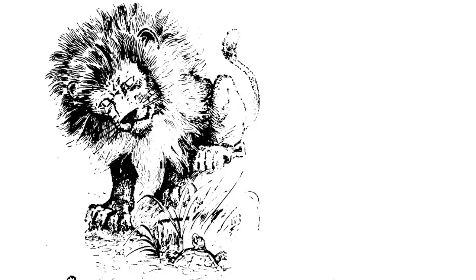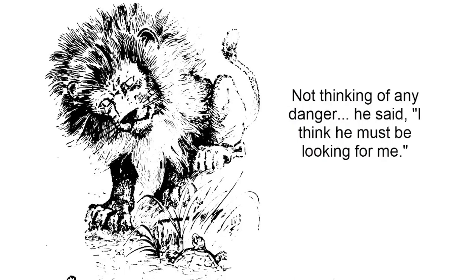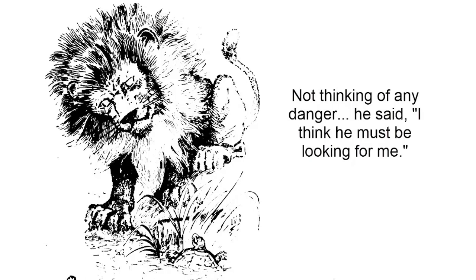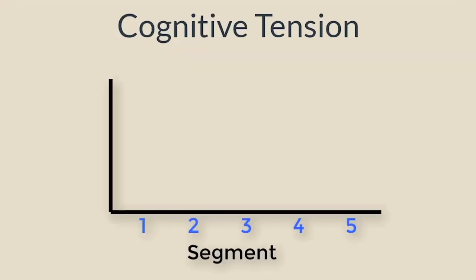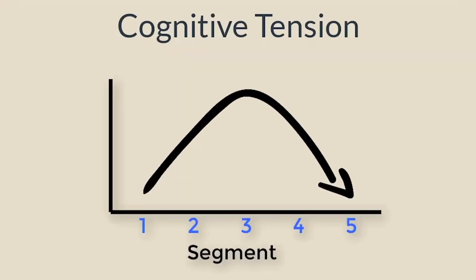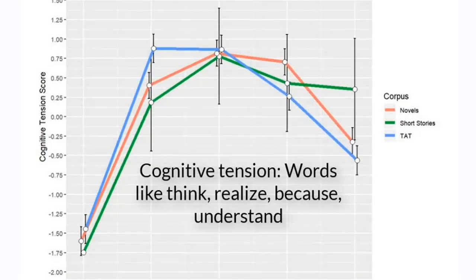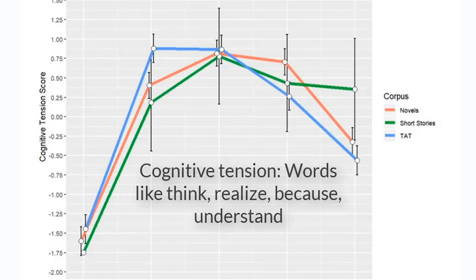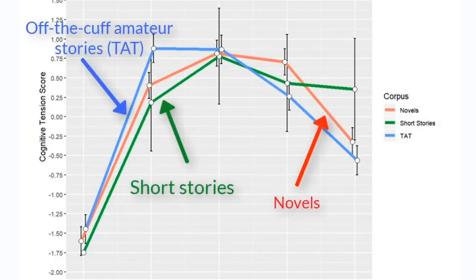Finally, there's the story's climax. Characters often confront challenges and conflict towards the middle of the story. A group of words called cognitive tension words — such as 'think,' 'realize,' or 'because' — reveal when people are trying to make sense of their world. We argued that cognitive tension words would start low in the story, peak around the middle, and then fall as the story ended. And again, our computer analyses found just that. All three types of stories show peaks in their use of cognitive tension words in the middle of the story.